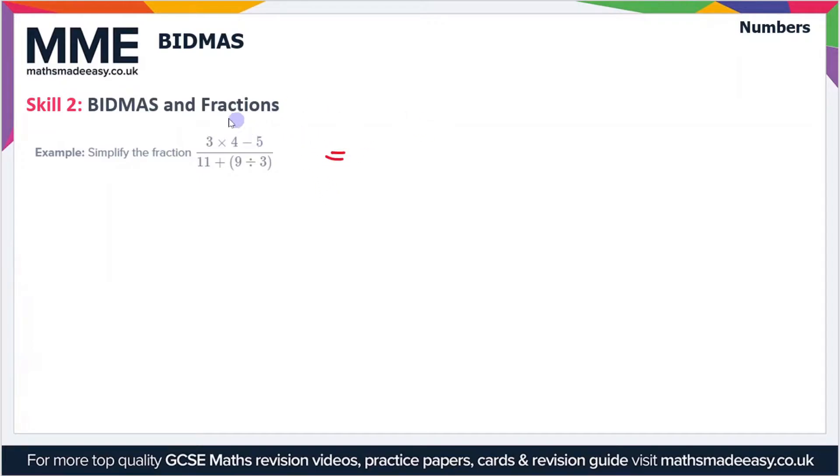We've got 3 × 4 - 5, so which one do we do first? Well, multiplication comes before subtraction, so we do the 3 × 4 first. So that gives us 12 - 5. Then we'll look at the denominator. Here we've got 11 + 9 ÷ 3. We've got brackets here, so brackets is the first part. So the bit inside the brackets is 9 ÷ 3, so we're left with 11 + 3.